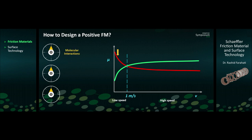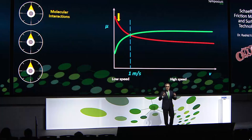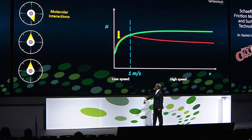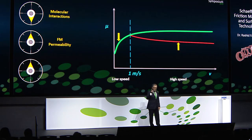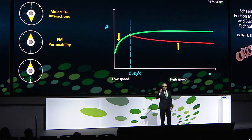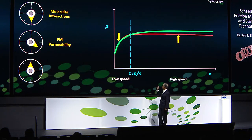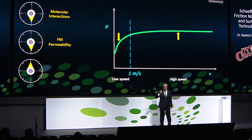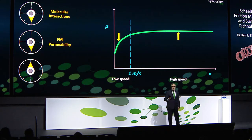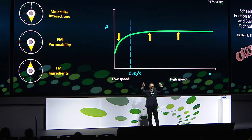First, we work with the molecular interaction between the friction modifier in the oil and our friction material. We can control this to bring the lower speed friction down as we want. The second knob is our material — we want to make it porous. When we make it porous, we avoid hydroplaning and make the higher speed friction go up. It looks positive. But we have a third knob: controlling the filler material inside the friction material to increase friction coefficient higher.